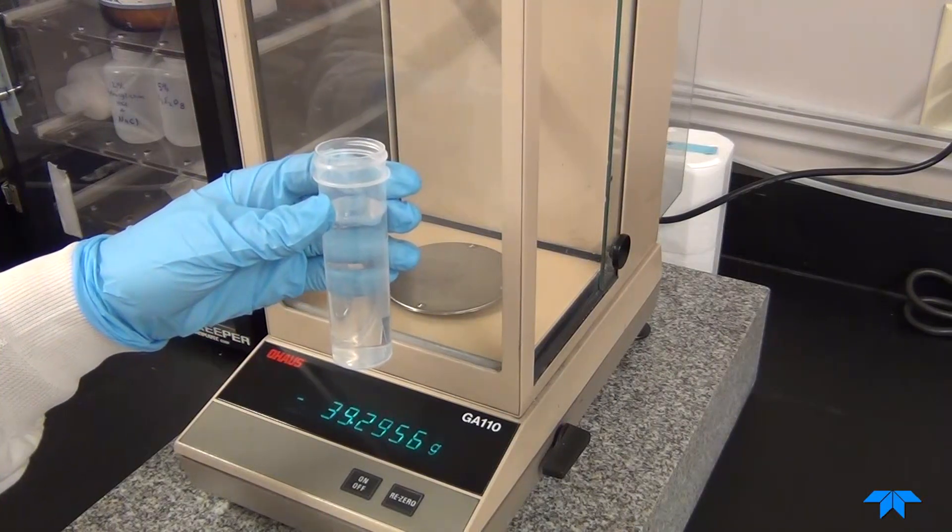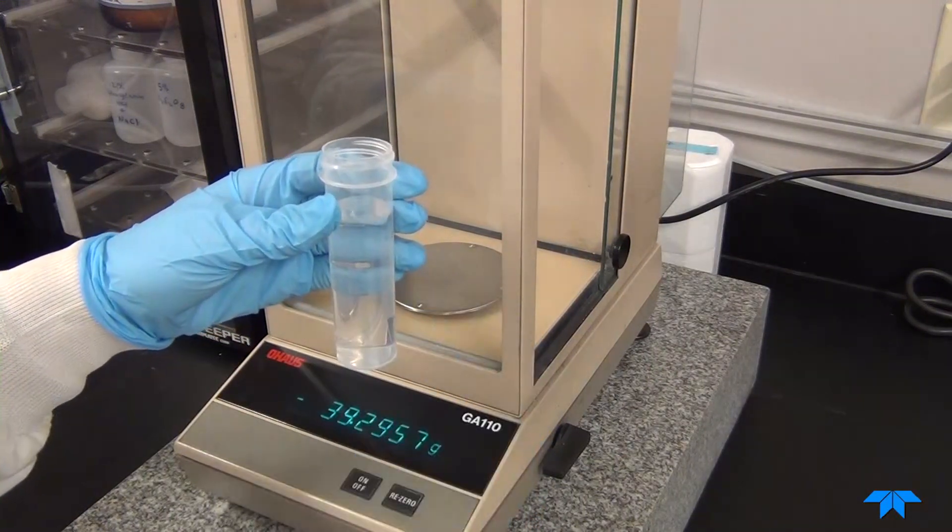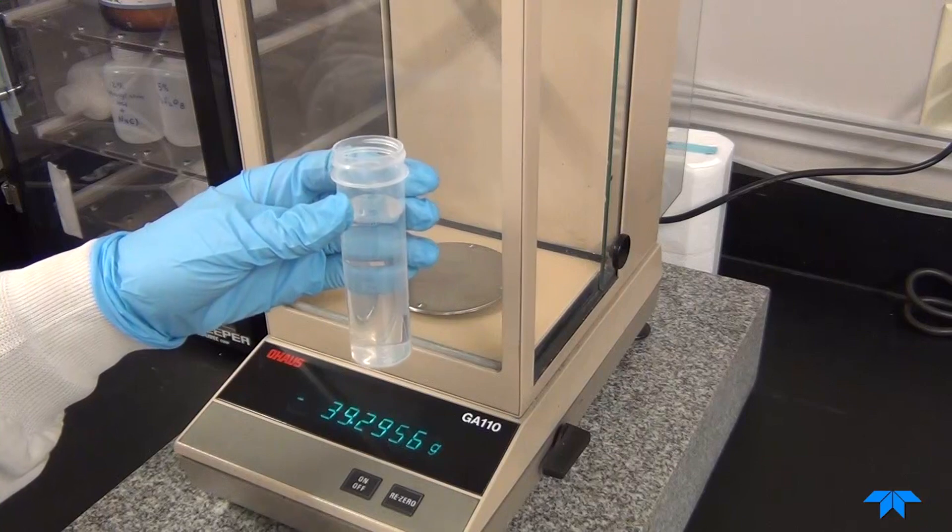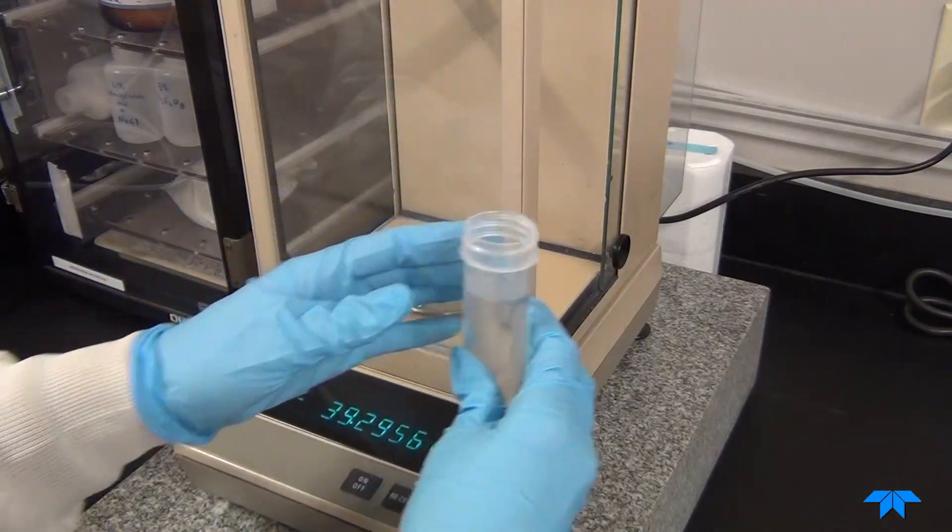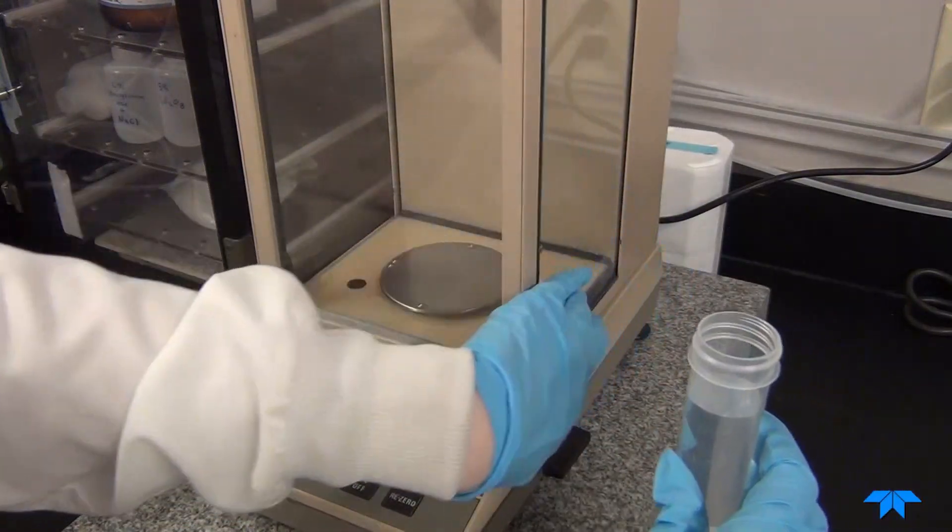Let's start with the stannous chloride reagent uptake. First we will need to fill a small sample tube or beaker with approximately 50 milliliters of DI water.